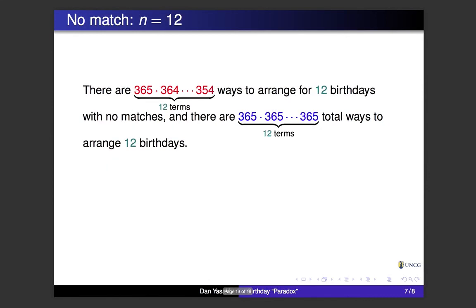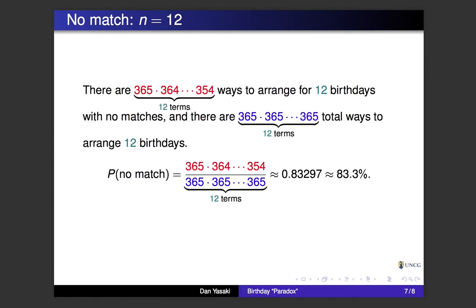I think you see the pattern. Let's ramp it up — suppose there are 12 people in the room. There are 365 choices for the first birthday, 364 for the second, and so on down to 354 for the 12th person, so it doesn't collide with the previous 11. The total ways to arrange 12 birthdays with no constraints is 365 multiplied 12 times. The probability of no match is 365×364×...×354 divided by 365¹², giving about 83.3% — so about a 17% chance of a match.